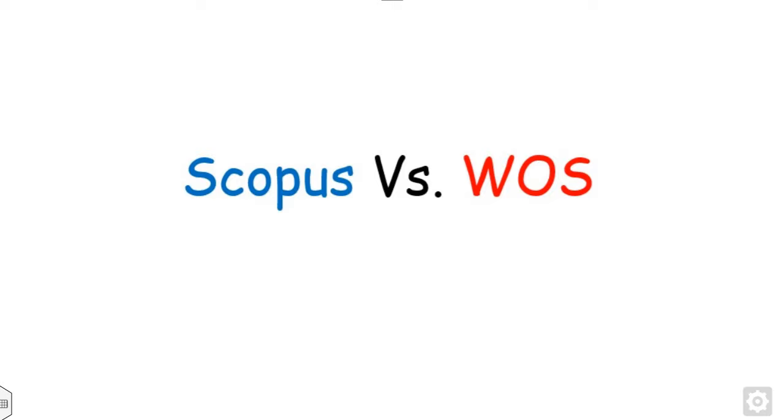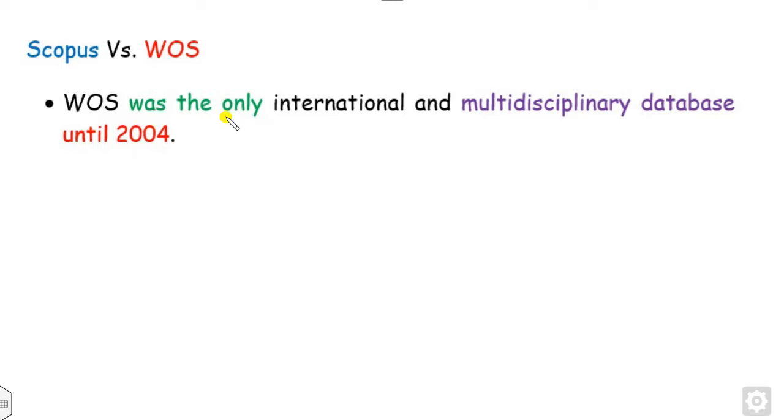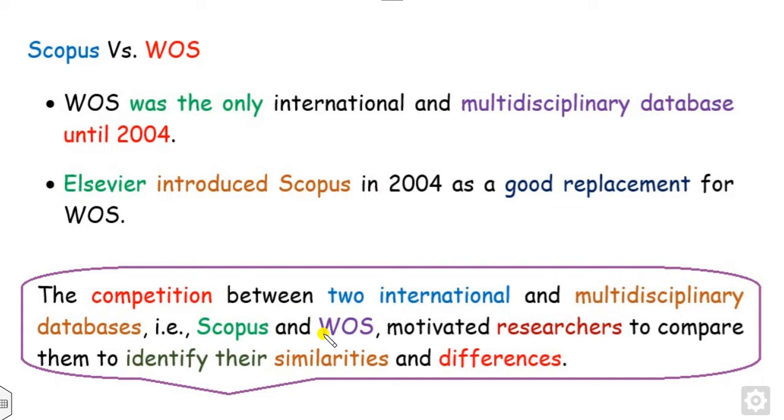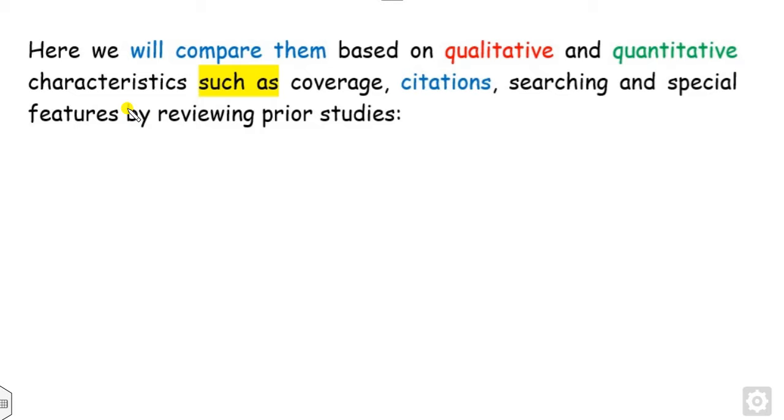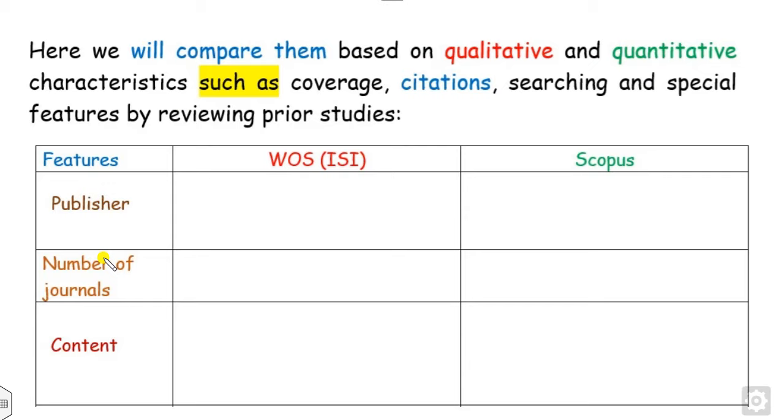What is the basic difference between them? Web of Science was the only international multidisciplinary database until 2004, but when Elsevier introduced Scopus in 2004, it became a good replacement for Web of Science. After 2004, there is competition between the two international databases, which motivates researchers to compare their identity and differences. We can compare their characteristics based on qualitative and quantitative analysis.